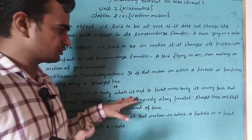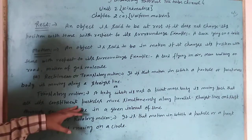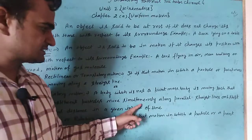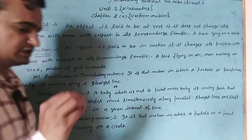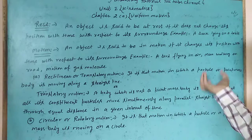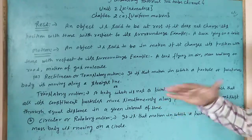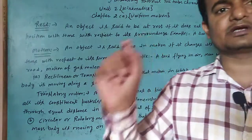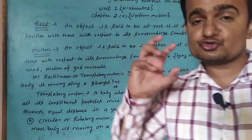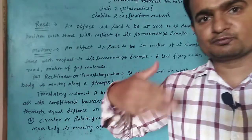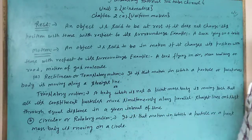Translatory motion क्या होता है? A body which is not a point mass body, in which all its constituent particles move simultaneously along parallel straight lines and are shifted through equal distance in a given interval of time. यानी जितने भी constituent particles हैं किसी body के, वो simultaneously एक समान रूप से parallel straight lines में move करेंगे और equal distance cover करते हैं equal interval of time में। जैसे कोई stone को force लगाओ — उसके सारे particles एक ही straight line में equal distance travel करते हैं।